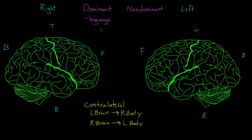Specifically, an area called Broca's area, which is responsible for speech production, and Wernicke's area, which is responsible for comprehension, are both located in the dominant hemisphere. There's also been some research that shows that the dominant hemisphere is analytic in nature. Along with language, things like logic and math skills are also both mainly controlled by the dominant hemisphere.